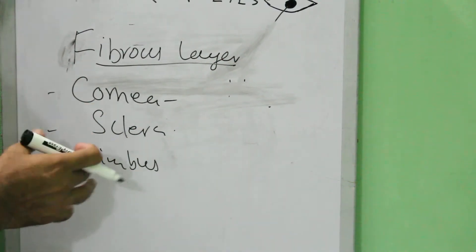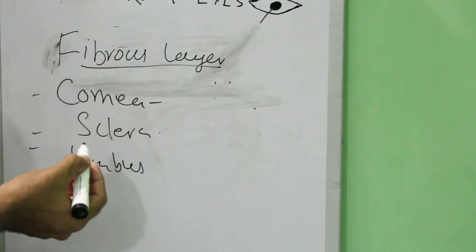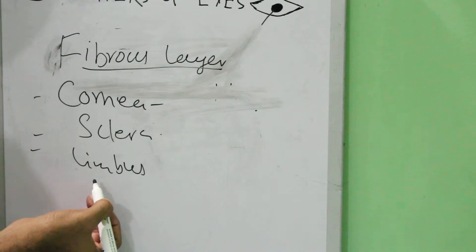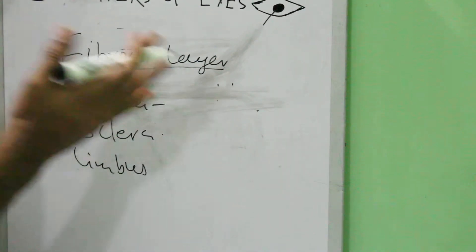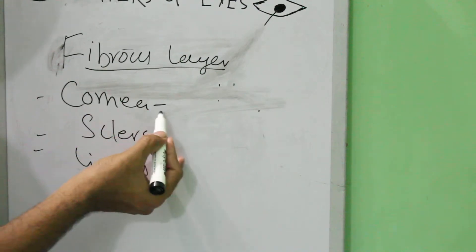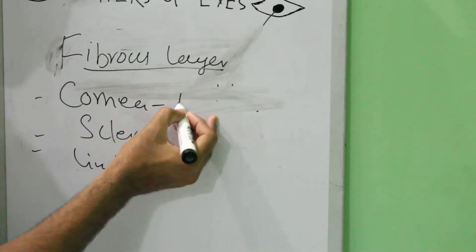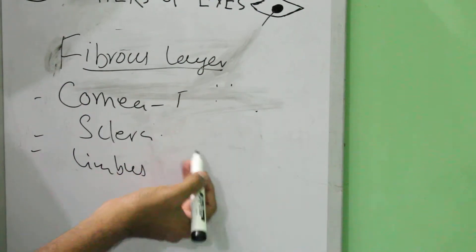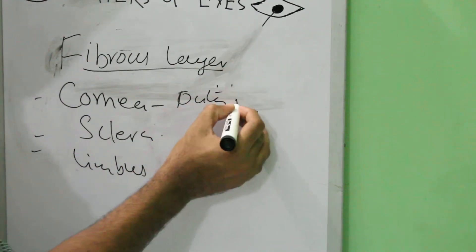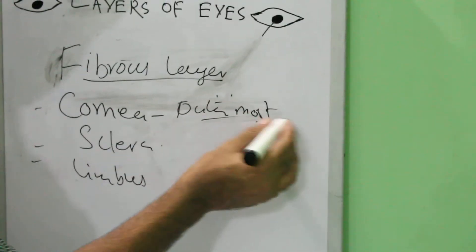The cornea is a very important part. It is the front part of the eyeball. If we go from outside to inside of the eyes, it is the outermost layer which filters the rays when they reach the retina.